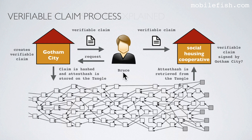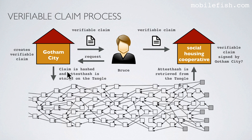I will now explain how the verifiable claims demo works. Bruce requires an attestation from Gotham City stating that he is a resident of this city and he is eligible for social housing. Gotham City creates a verifiable claim and issues this verifiable claim to Bruce, attesting that he is a resident of Gotham City and he meets all the conditions for social housing.